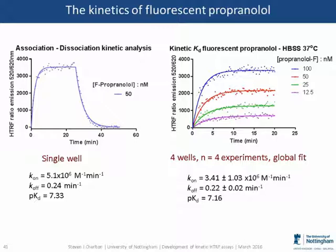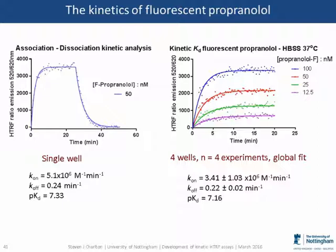The next step was to characterise our tracer ligand — fluorescent propranolol. The first panel shows the association and dissociation kinetics of that ligand: we added the ligand, watched it associate over time, then at about 25 minutes added a large concentration of competing compound to observe the dissociation phase — all generated from a single well. The second panel shows association of different concentrations of propranolol, demonstrating that the association rate is concentration dependent. We can globally fit those data to a model of association to generate K-on and K-off. From the right-hand panel, only four wells from a 384-well plate generated all those data.